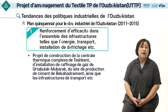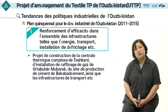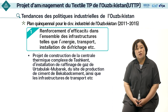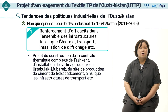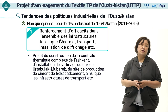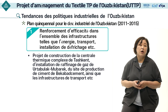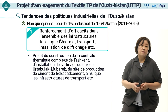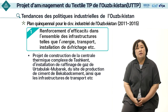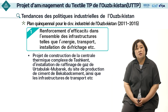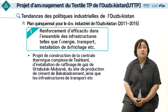Le plan quinquennal pour le développement industriel dans divers domaines a donc été établi, permettant d'augmenter l'efficacité de l'énergie et du transport, des installations de défrichage et d'infrastructures dans son ensemble. Le projet central thermique complexe de Tashkent est mis en œuvre et les infrastructures de base sont installées telles que les installations de raffinage du gaz, les sites de production de ciment ainsi que d'autres installations d'infrastructures de transport.